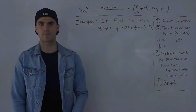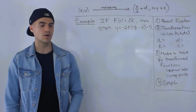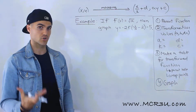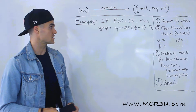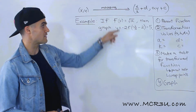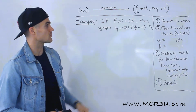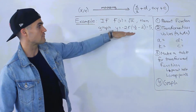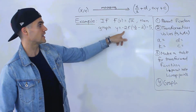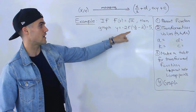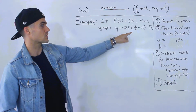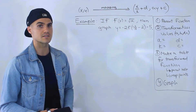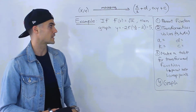What's up everyone, welcome back. Patrick here, moving on to another example dealing with transformations. We're told if f of x equals the square root of x, then we have to graph negative 2 f of negative x over 3 minus 2, minus 5.